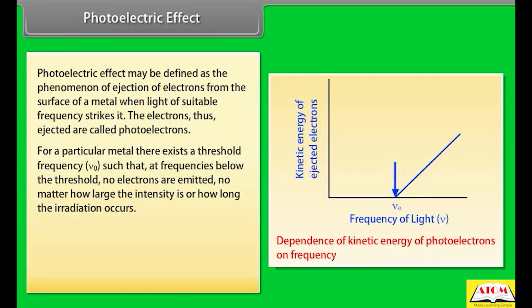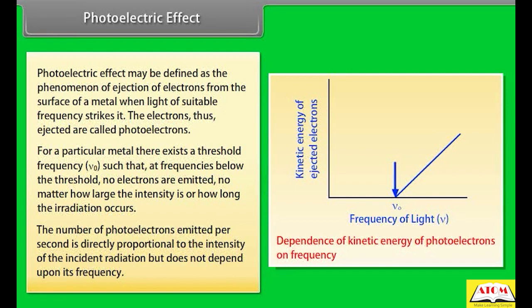For a particular metal, there exists a threshold frequency ν₀ such that at frequencies below the threshold, no electrons are emitted — no matter how large the intensity is or how long the radiation occurs. The number of photoelectrons emitted per second is directly proportional to the intensity of the incident radiation but does not depend upon its frequency.